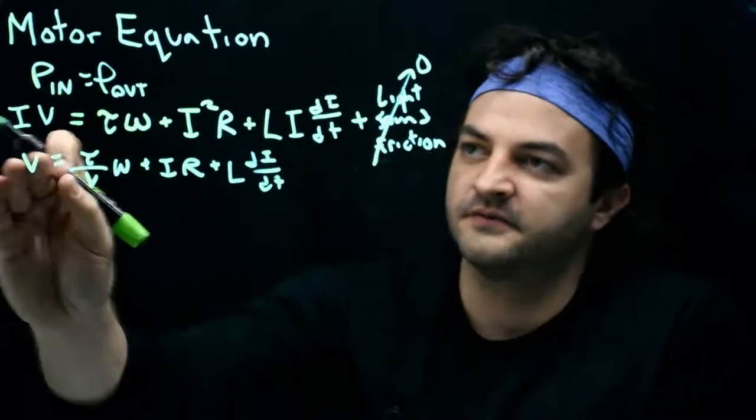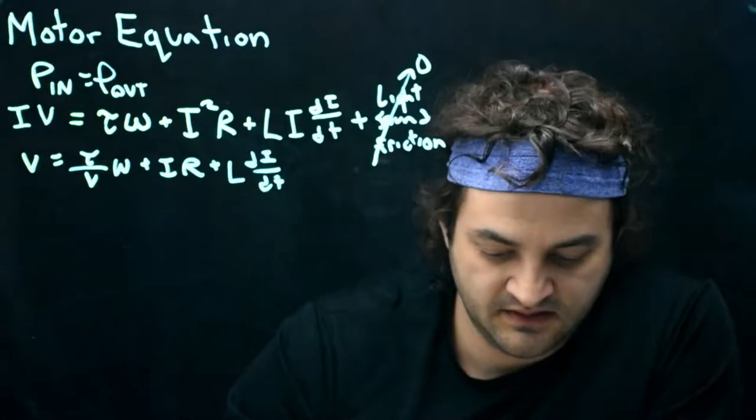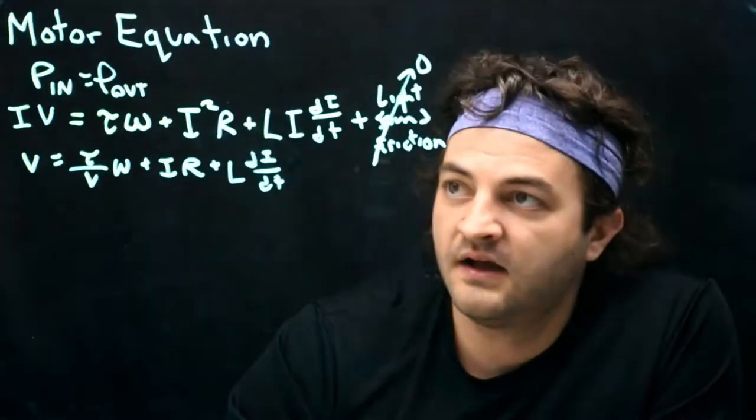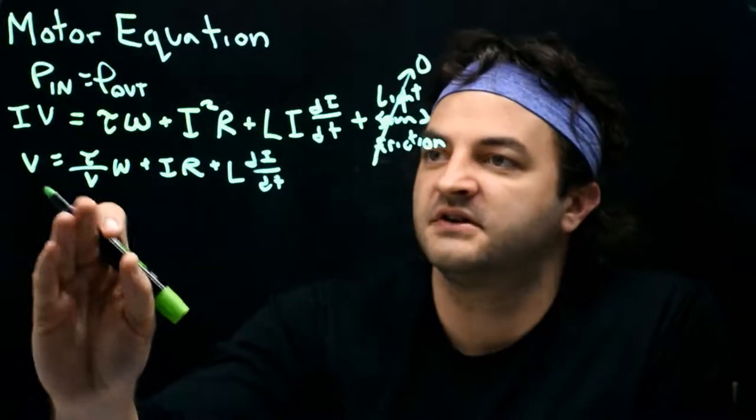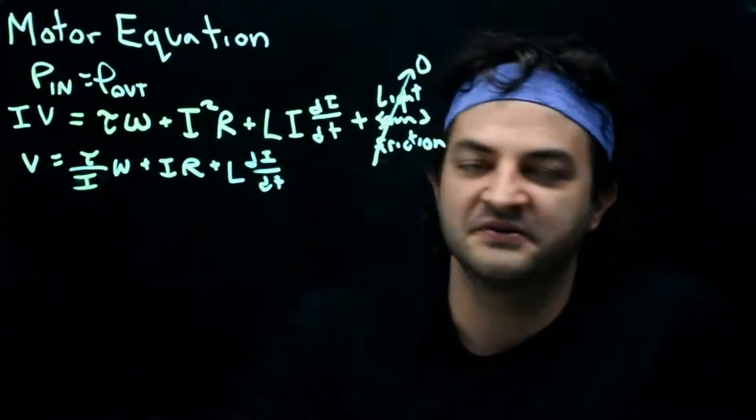Of course, friction is probably the biggest one. The textbook describes a little bit of modeling on how you could do a bit better job on friction. But let's throw that out for now. Typically, when we look at this equation, we divide each side by I. So we would get V equals tau over I omega plus IR plus L-D-I-D-T.